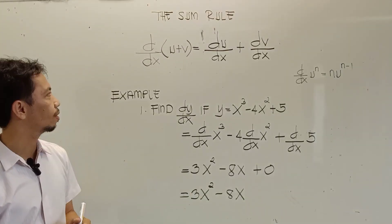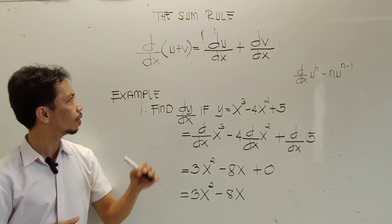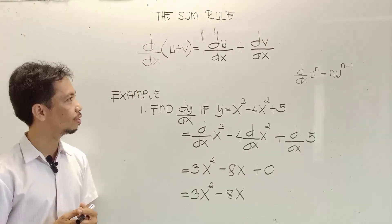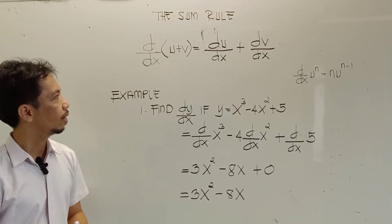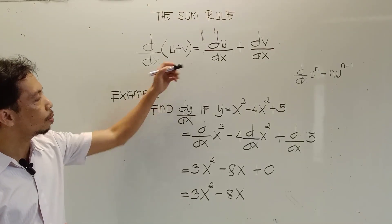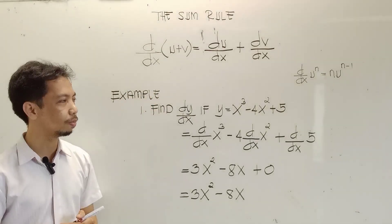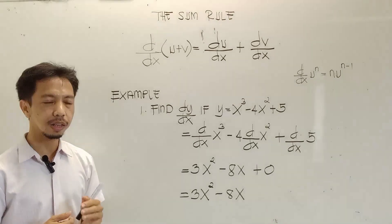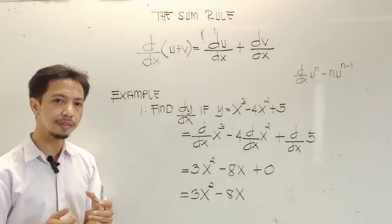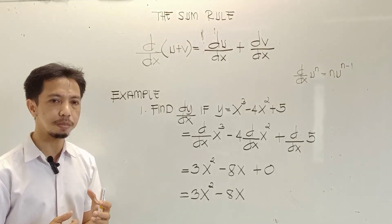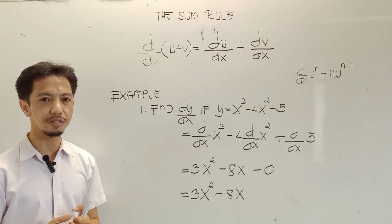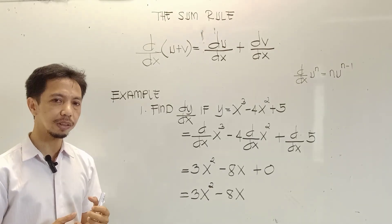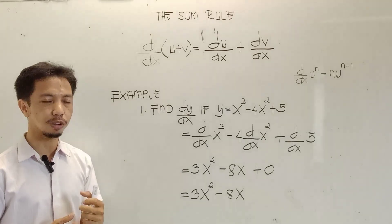The sum rule states that the derivative of the sum of two or more terms is equal to the sum of the derivative of each term. Again, the sum rule states that the derivative of the sum of two or more terms is equal to the sum of the derivative of each term.